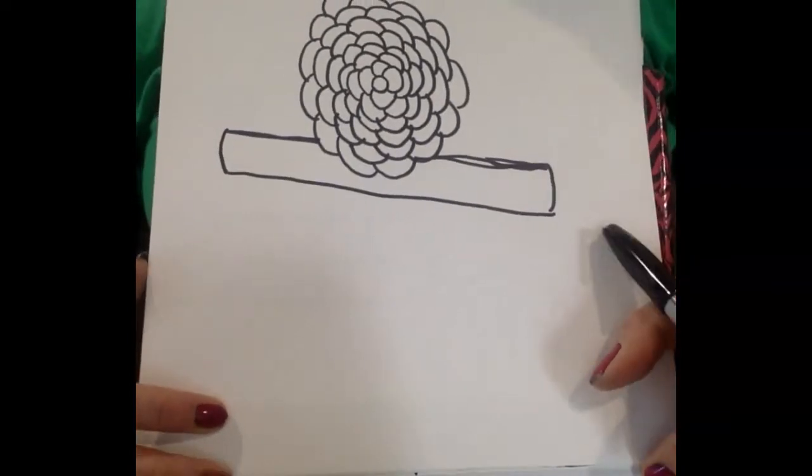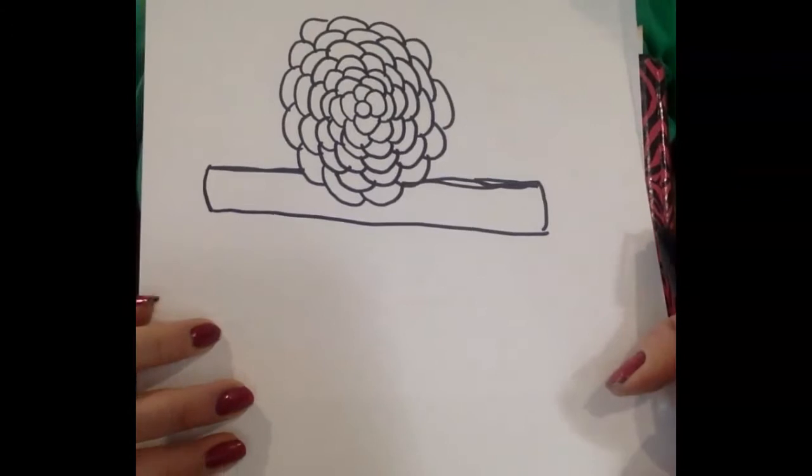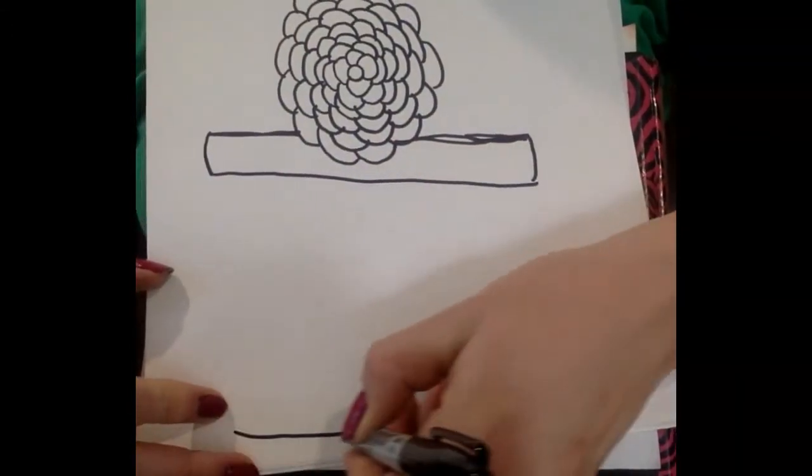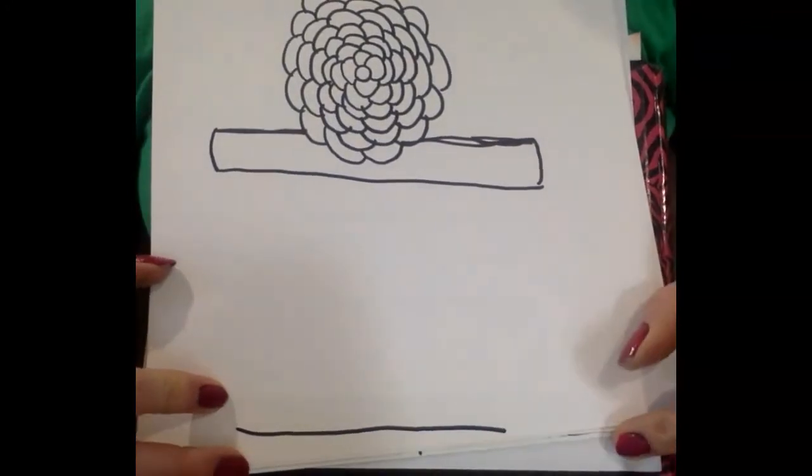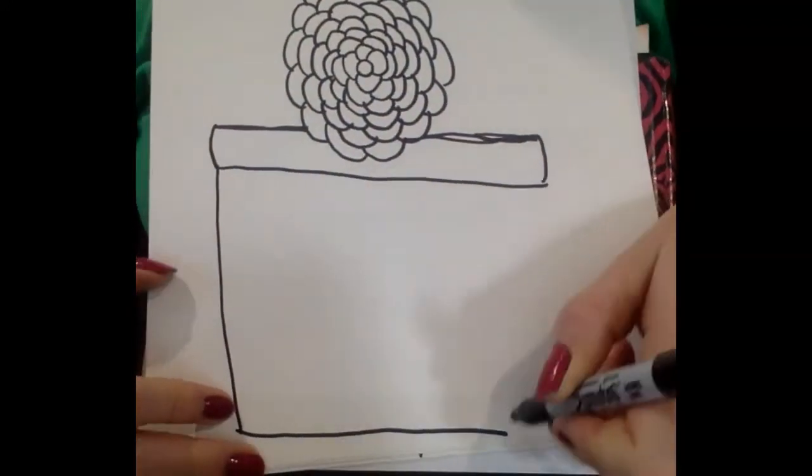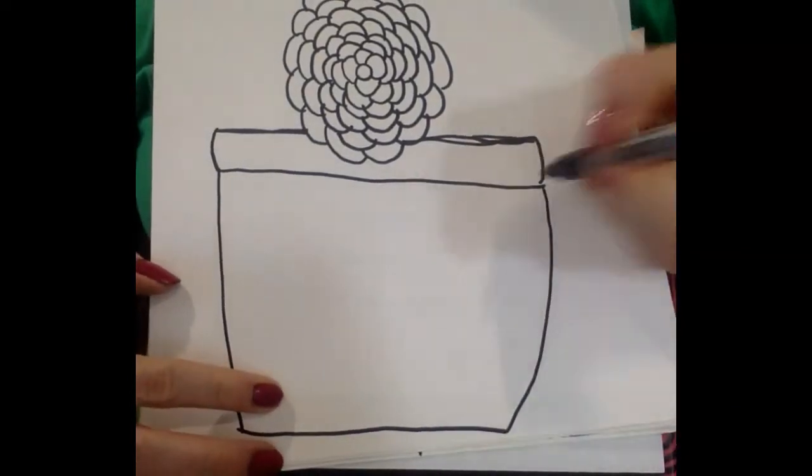Then I want to go ahead and draw the sides of my flower pot. So I would recommend drawing the bottom of the flower pot first, just to give you an idea of where that's gonna go. And then you can draw the sides by going from the top to the bottom, just like that.